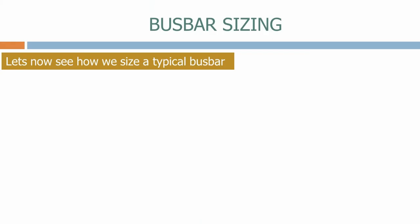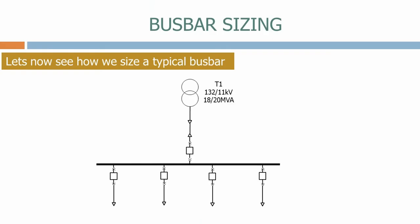Let's now see how we size a typical busbar. Here we have a 132 to 11 kV transformer, rated at 20 MVA, feeding a busbar through an incomer. The maximum current that will be fed into the busbar will depend on the power rating of the transformer. The power of the transformer equals root 3 times its maximum voltage and current ratings. Therefore, the maximum current equals the power rating divided by root 3 times its voltage rating.